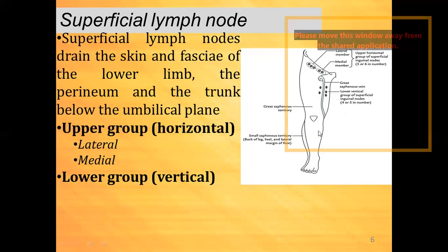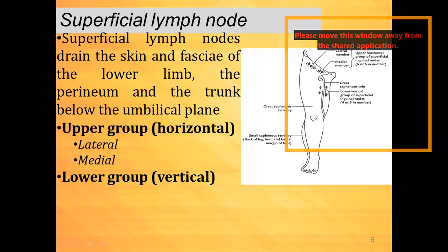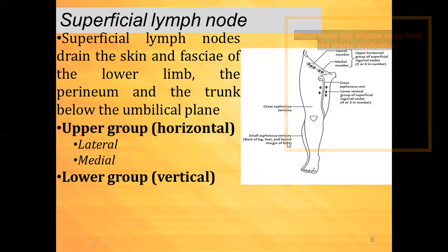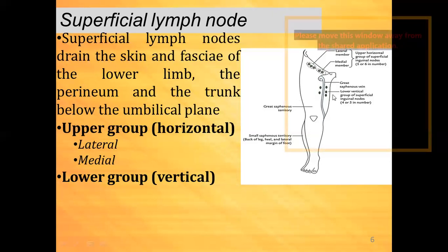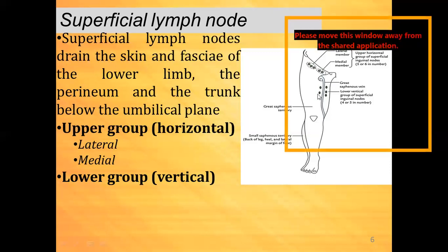As we know, the lymphatic system is accessory to the venous system, so the lymphatic vessels accompany the veins. Here you can see the great saphenous vein, along which we can trace the group of lymph nodes. These are the superficial group. The small saphenous vein and the great saphenous vein are both visible in the diagram. The great saphenous vein is accompanied by the vertical group — the lower vertical group — which we call the superficial inguinal lymph nodes. We can see four or five lymph nodes.